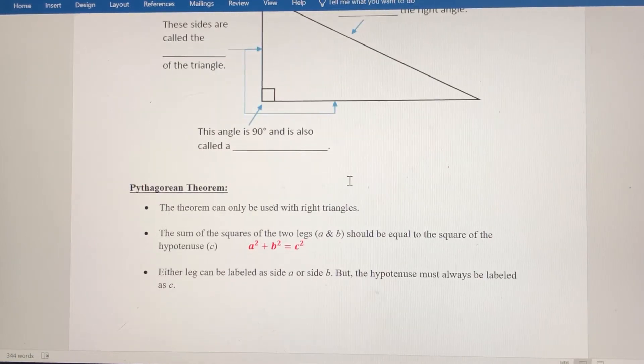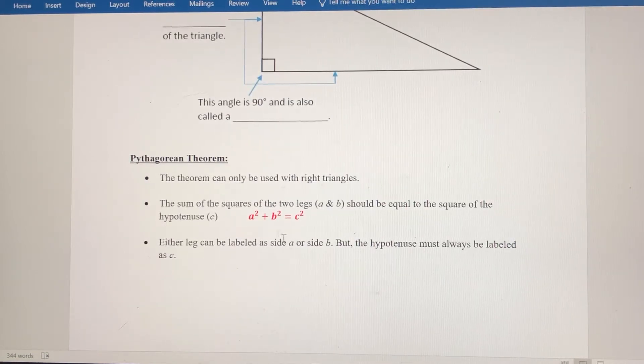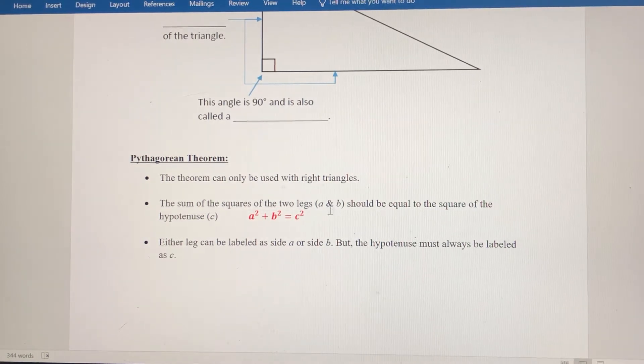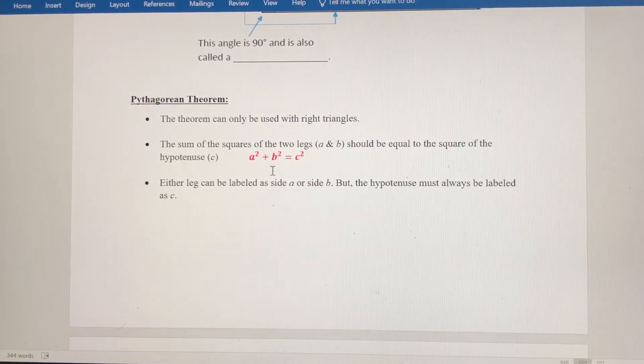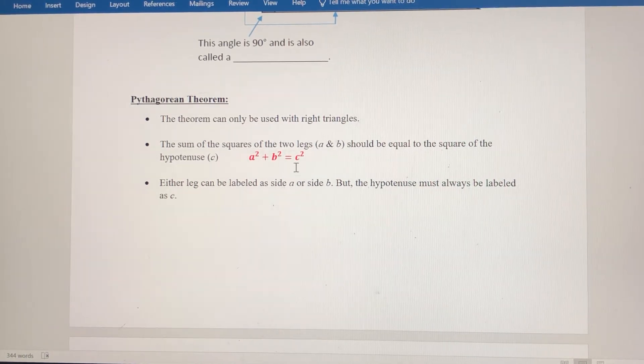So some things to know about Pythagorean theorem. It only works with right triangles, and the Pythagorean theorem is that the sum of the squares of the two legs, so a² and b², we're going to refer to the legs as a and b, is going to be equal to the square of the hypotenuse. So a² + b² = c². The legs are interchangeable. It doesn't matter if you call one leg a or b. But the hypotenuse must always be c.